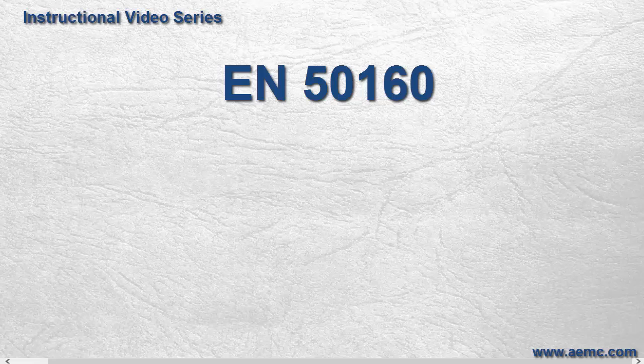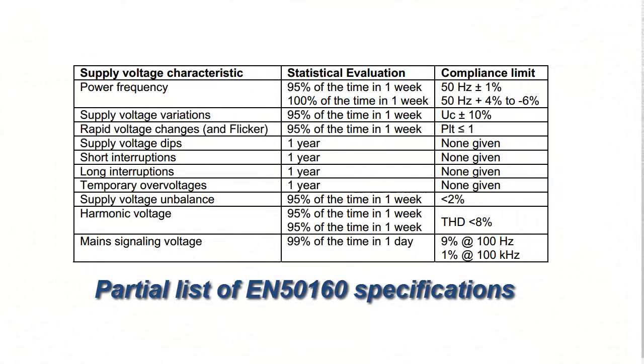EN 50160 defines a set of specifications and allowable tolerances for characteristics including frequency, slow voltage variations, rapid voltage changes, harmonic distortion, unbalance, and other conditions. These variables are set forth in the EN 50160 standard, which can be viewed and downloaded from a number of online sources.